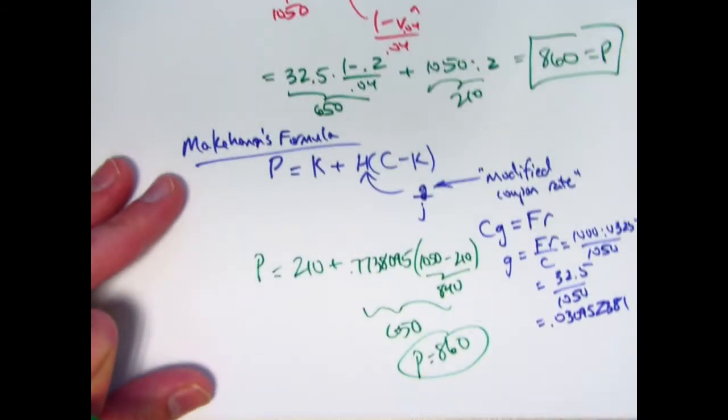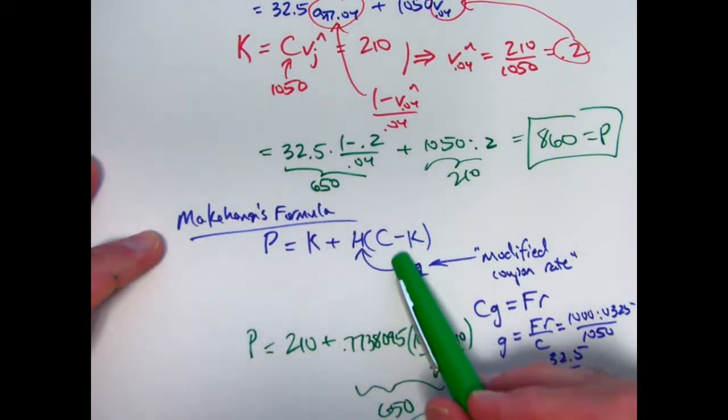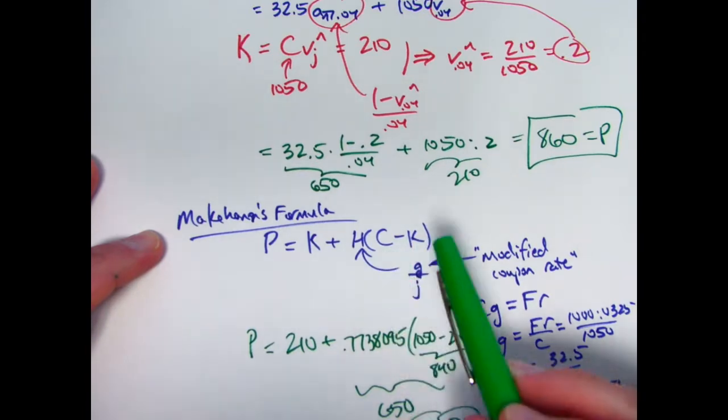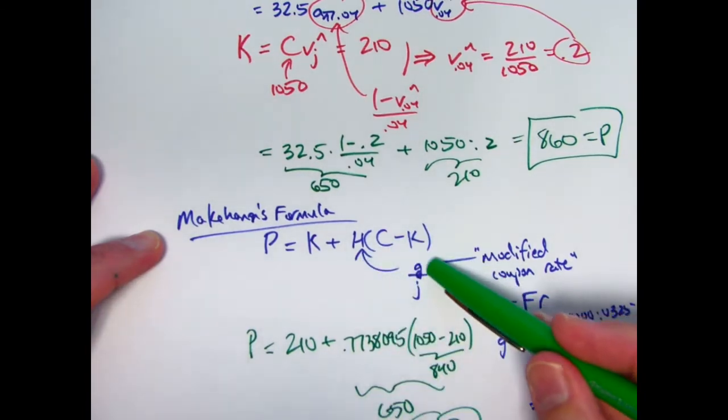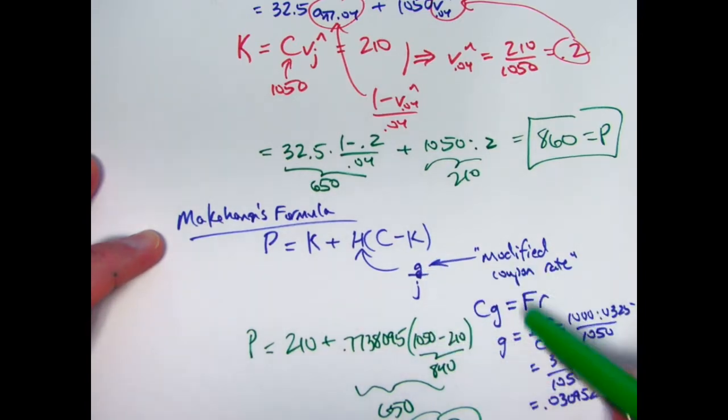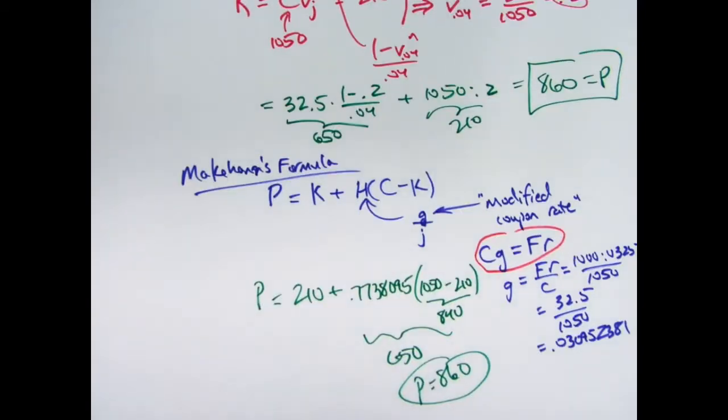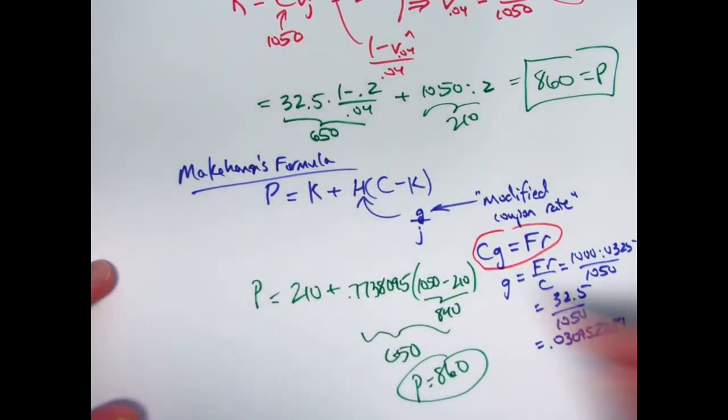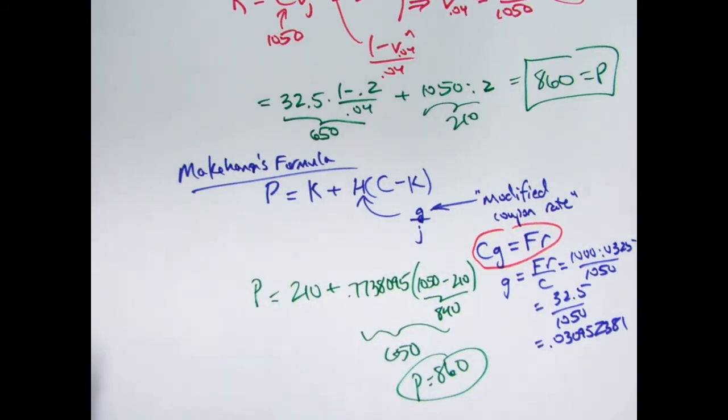So we solved it with the second way. Here the key is, this is Makeham's formula. C is the redemption amount. K is the present value of the redemption amount. H in general is not R over J, but G over J, where G is the modified coupon rate and satisfies this key equation here. When C equals F, as is often the case, then G will equal R. But if C does not equal F, then G will not equal R. But this equality between C times G and F times R does always need to hold.